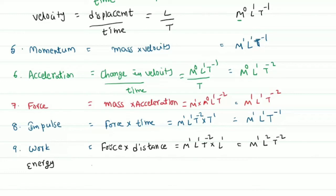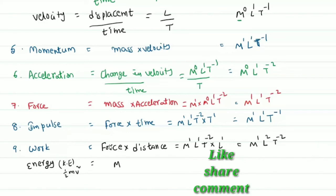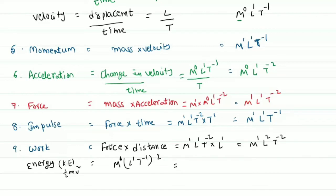Energy has the same dimensional formula as work. For example, kinetic energy is (1/2)mv². Mass is M power 1 and velocity squared is (L power 1, T power minus 1) whole square, giving L power 2, T power minus 2. So energy is M power 1, L power 2, T power minus 2.